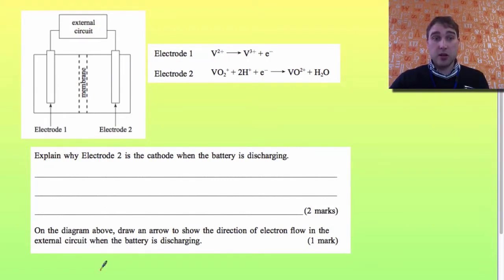In the second part of the question it says draw an arrow to show the direction of electron flow in the external circuit. To do that we need to figure out what the charge is on the electrodes. Electrode 2, we just figured out that that is the cathode. The rule is if it's a cathode in a galvanic cell that's positive, so that means the other one has to be negative.